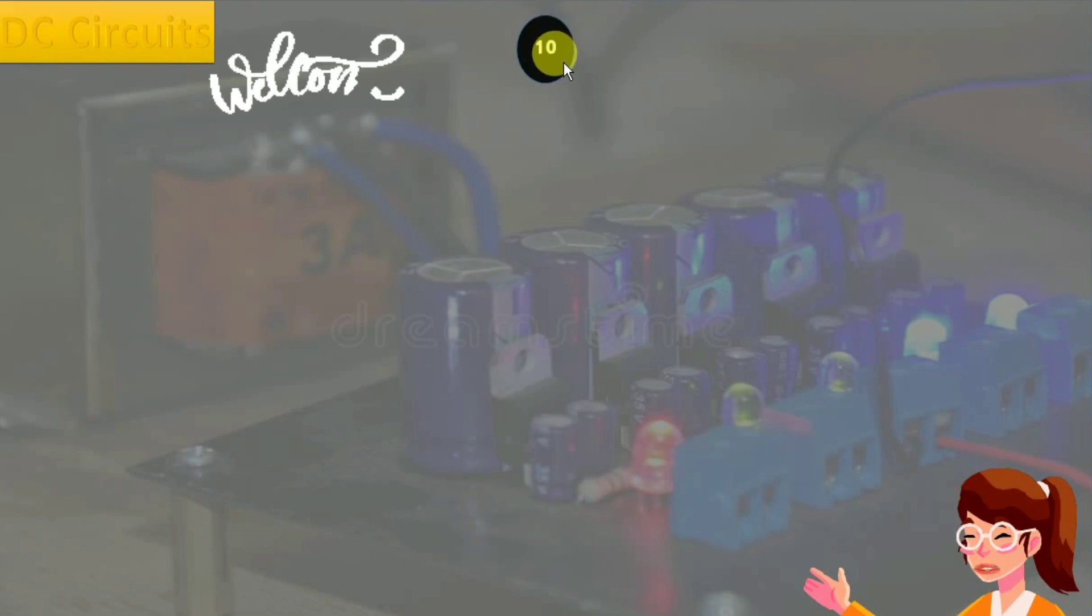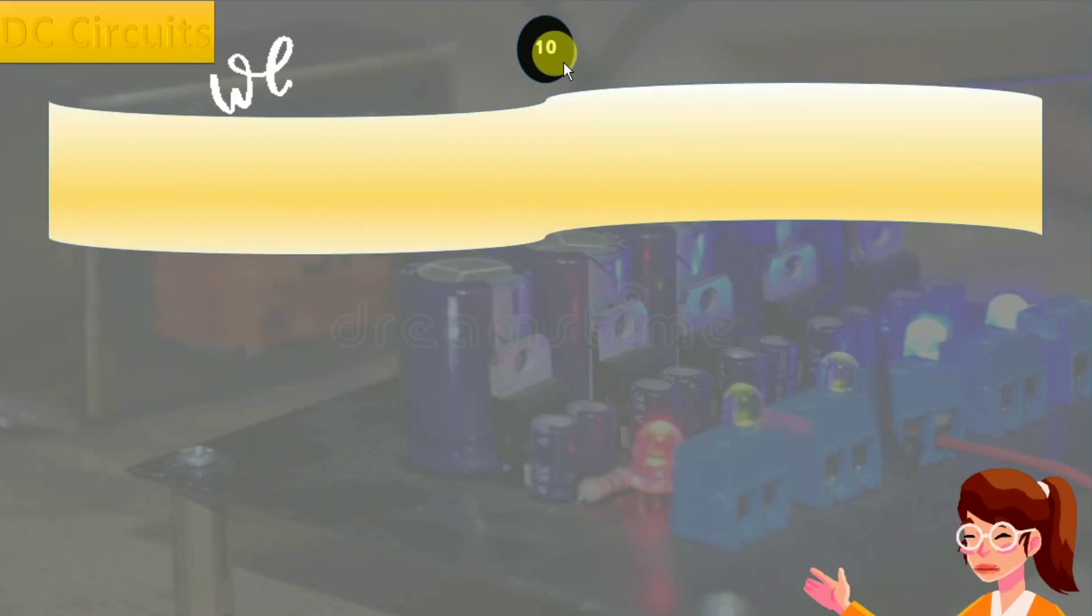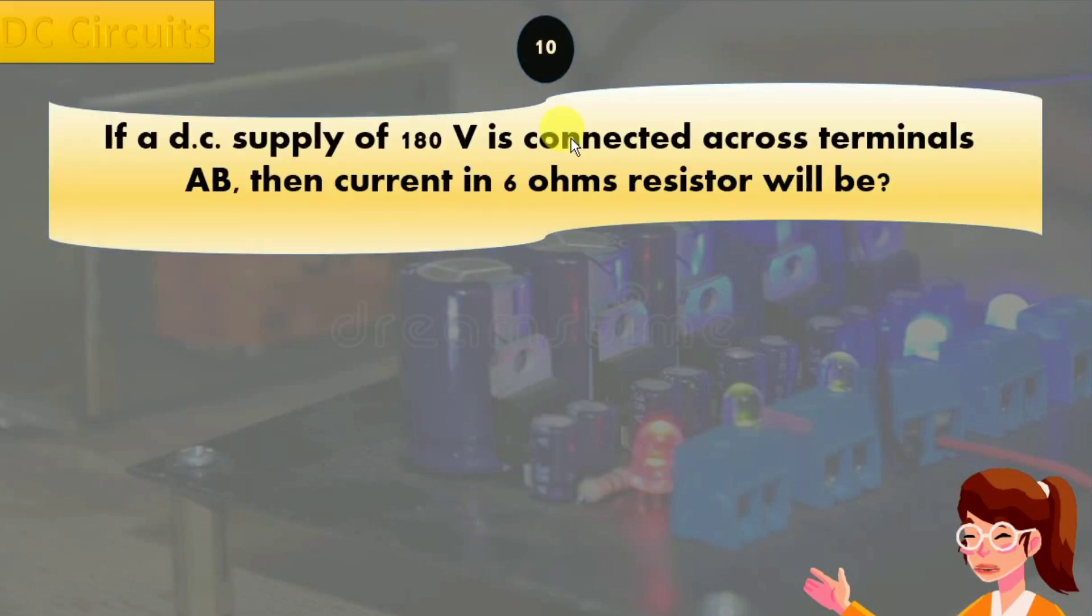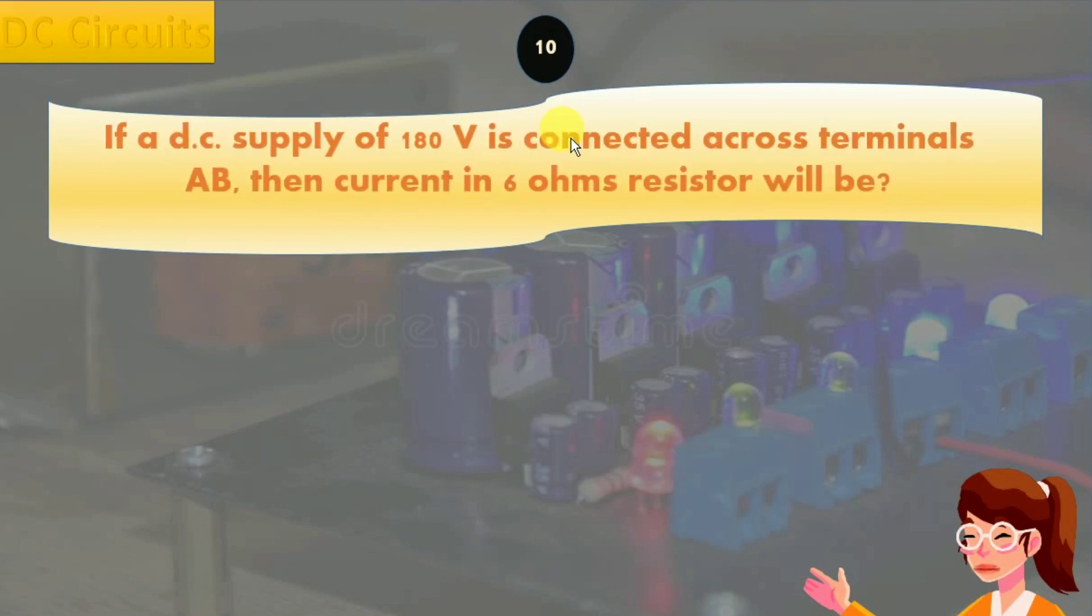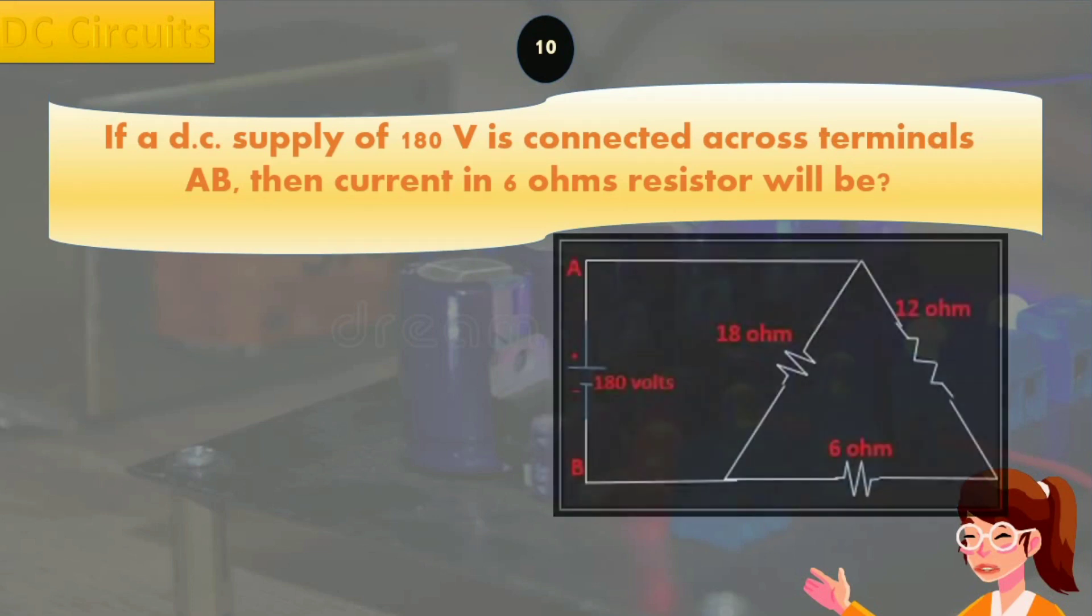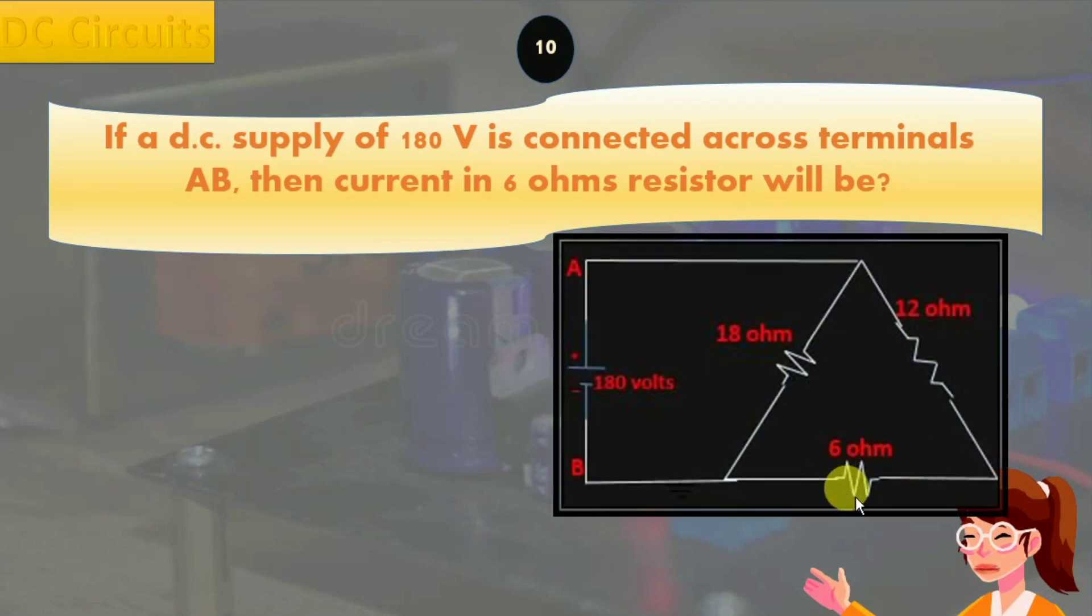DC circuits question number 10: If a DC supply of 180 volts is connected across terminals AB, then current in 6 ohm resistor will be? In this figure, we have to find current through 6 ohm resistor.